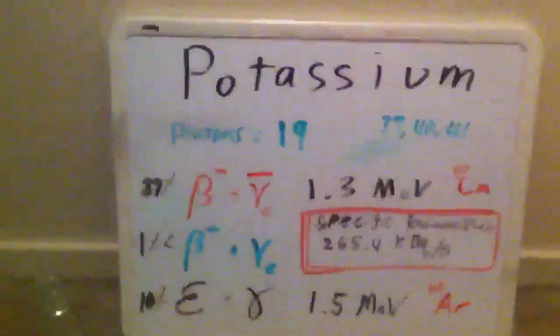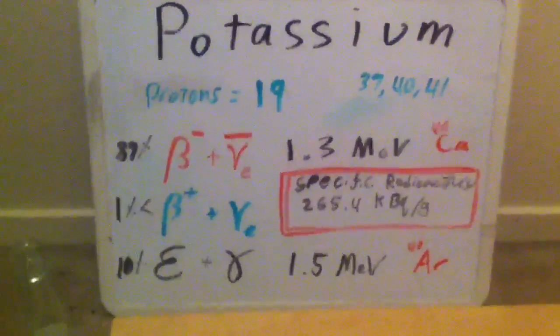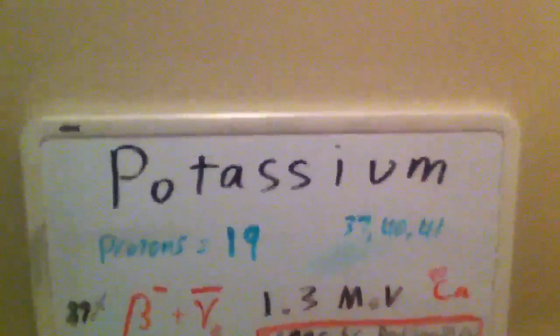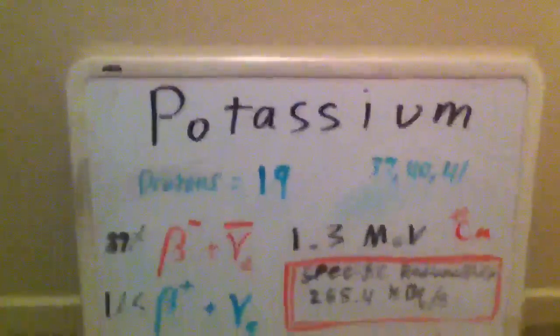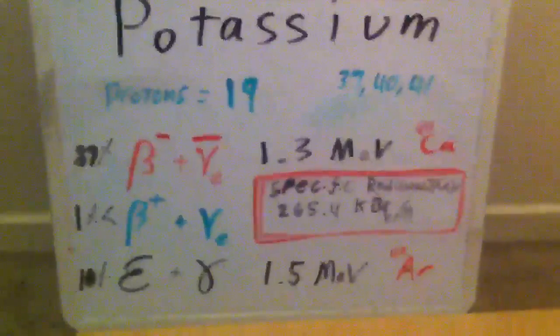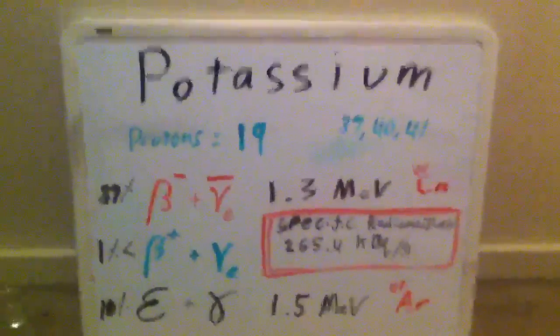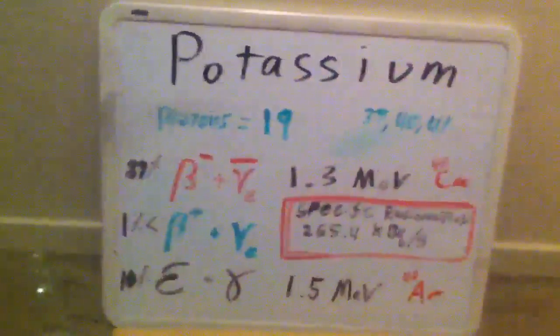Let me tell you a little bit about potassium because it's important to understand. Potassium is a really, really important alkali metal that your body requires to survive. Most people get their potassium from things like bananas, like this guy right here.